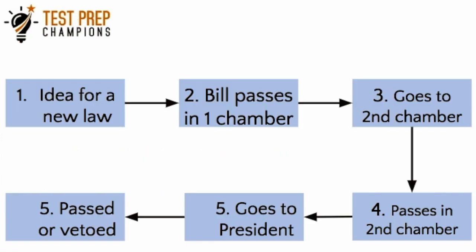Now let's talk about how a bill becomes a law. Someone gets an idea for a law, then they contact their senator or representative, and that person decides to write a bill. The bill will be introduced by either a representative or senator into the House or Senate. For example, if someone takes their idea to their local senator, the senator introduces the bill to the Senate, where there will be debate, discussion, and then a vote. If the majority of senators vote in favor, it then moves to the House.